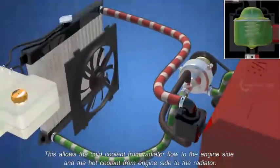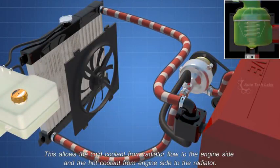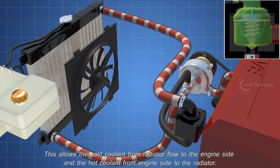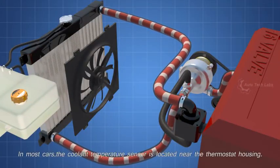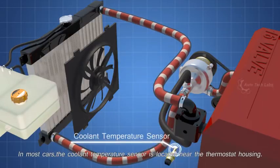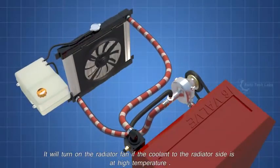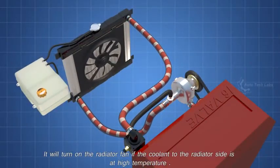This allows the cold coolant from radiator flow to the engine side, and the hot coolant from engine side flow to the radiator. In most cars, the coolant temperature sensor is located near the thermostat housing. It will turn on the radiator fan if the coolant to the radiator side is at high temperature.